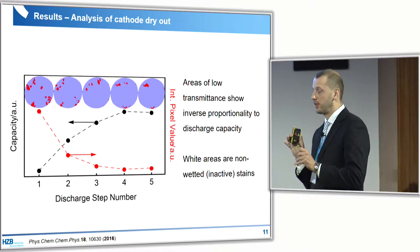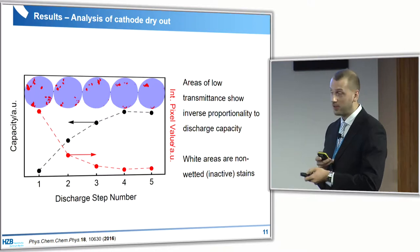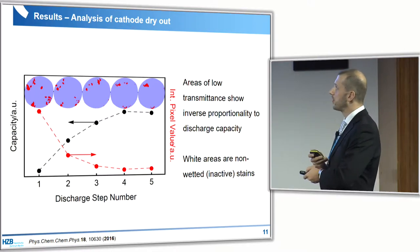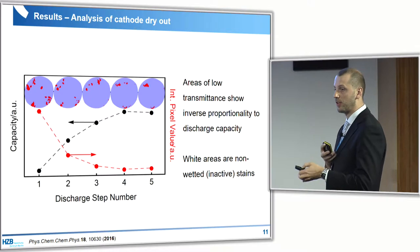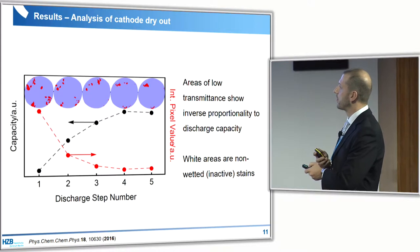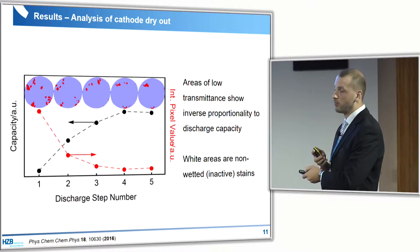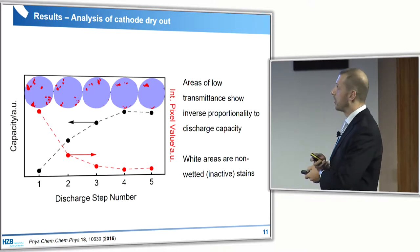In the very first five cycles, you can compare the dry areas or white stains visible in the video at the end of discharge, and then compare them to the capacity measured with galvanostatic charge-discharge. There is a very nice correlation: if you have a lot of inactive area, you will of course have less discharge capacity.